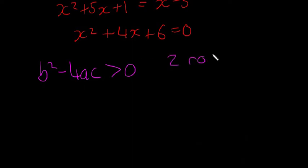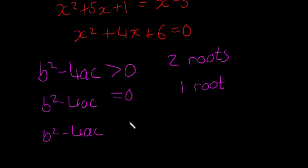that it has two roots, and if b squared minus 4ac is equal to 0, it'll have one root, and if b squared minus 4ac is negative, or if it's less than 0, it'll have 0 roots.